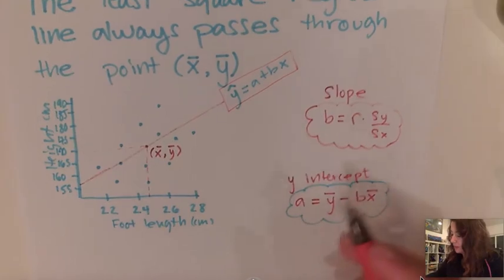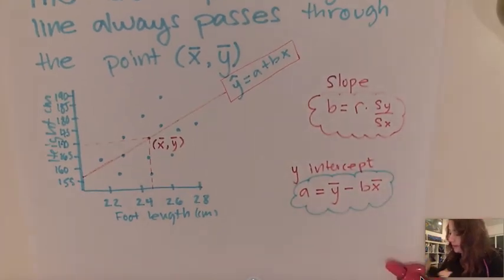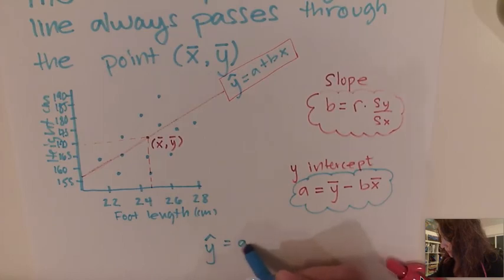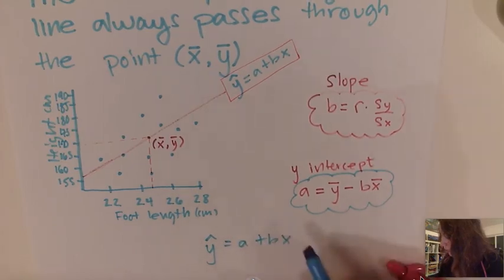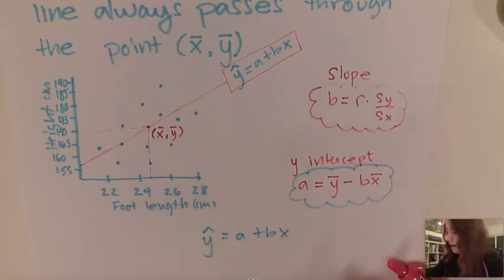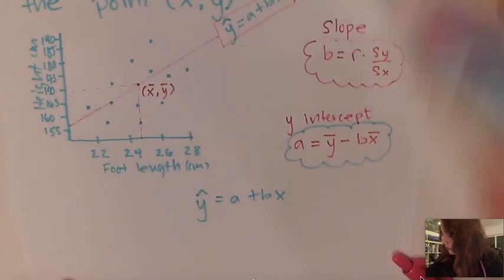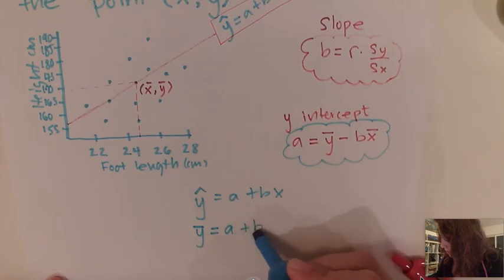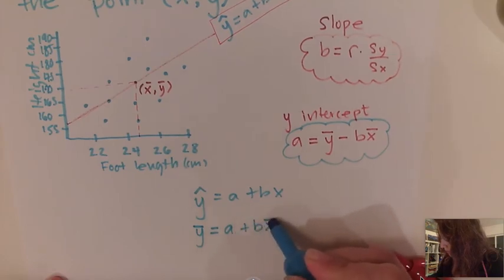So if I actually use the best fit line and rewrite it as ŷ equals a plus bx, I'll substitute the values x and y with the average of y and the average of x. I'm going to plug in the average of y equals a plus b times the average of x because